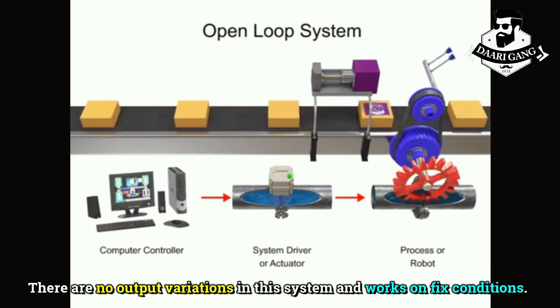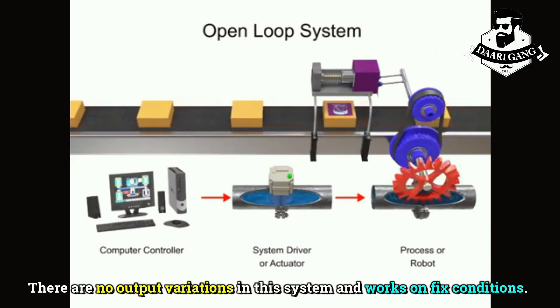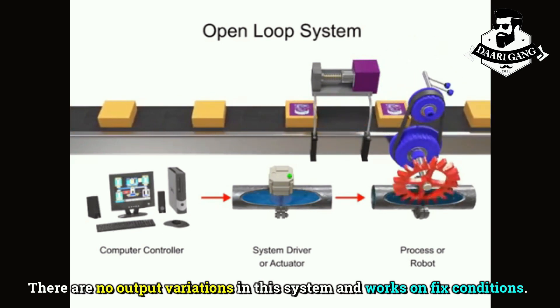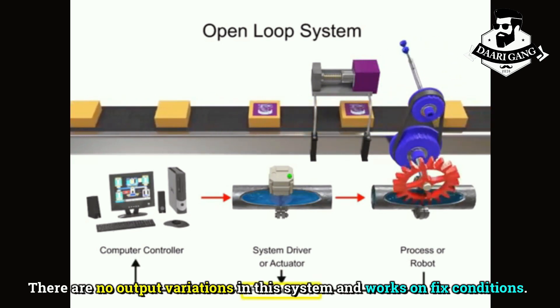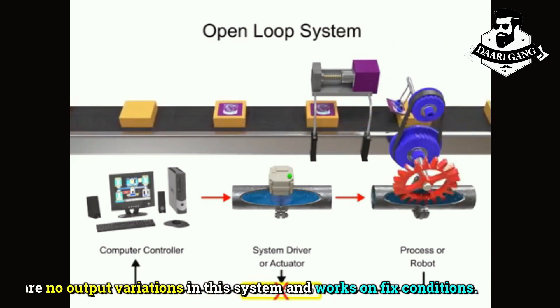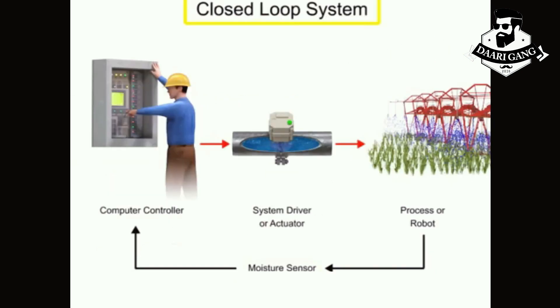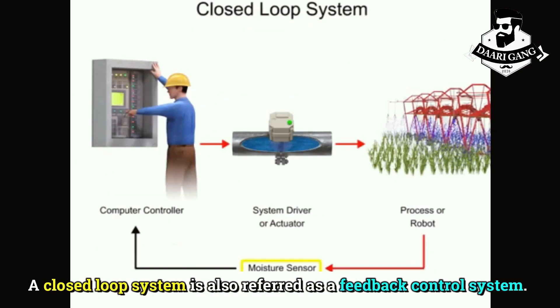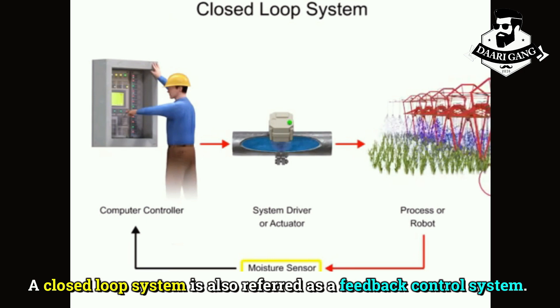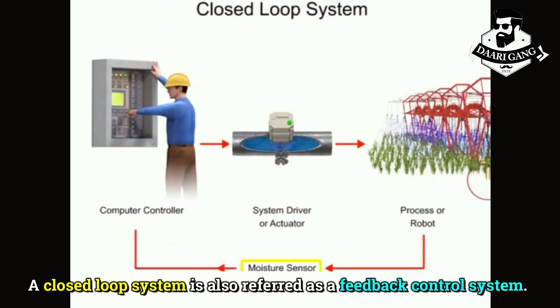There are no output variations in an open loop system and it works on fixed conditions. A closed loop system is also referred to as a feedback control system.